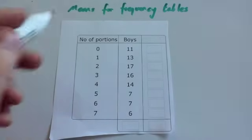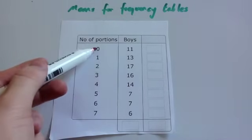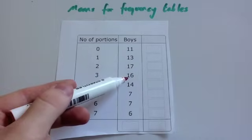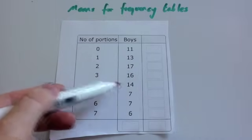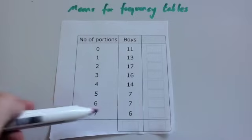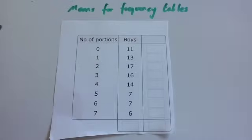If you want to find the mean from this frequency table, you could write out a list. You could write 11 zeros, 13 ones, 17 twos, 16 threes, 14 fours, 7 fives, 7 sixes, and 6 sevens. Then you could add together all those numbers and divide by how many there are, and that would be a possible way of working it out. There's a quick way of doing that though.